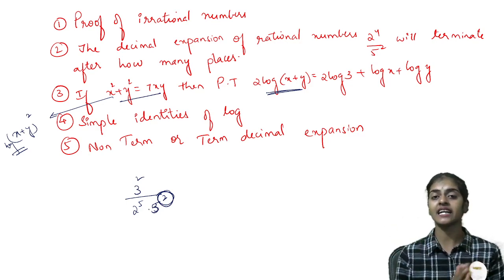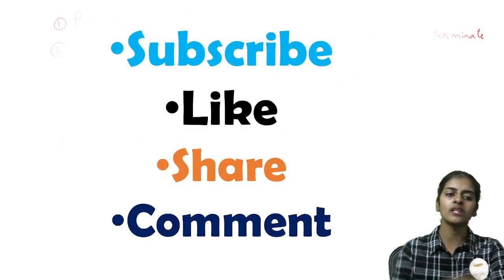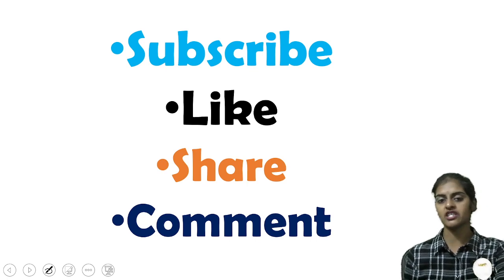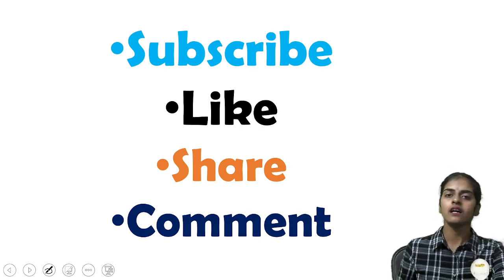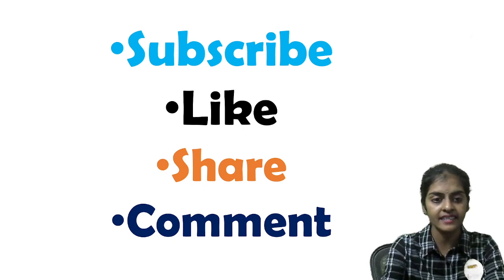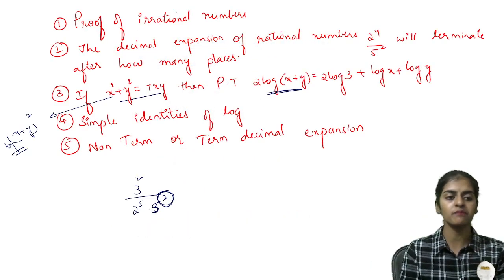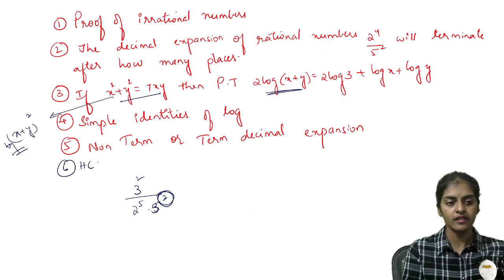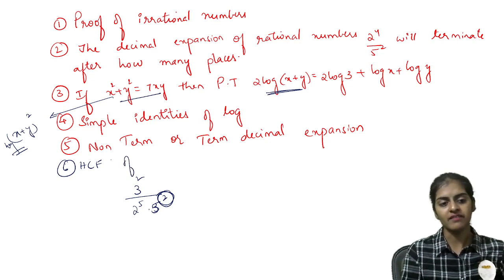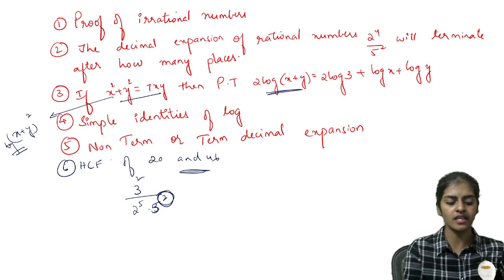These are the model questions from chapter 1 I want you to practice seriously. Other than this, you have one more important question: finding HCF using Euclid's division lemma - for example, finding HCF of 20 and 46 using Euclid's division lemma.